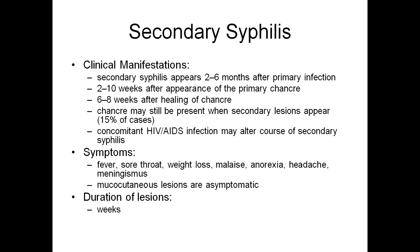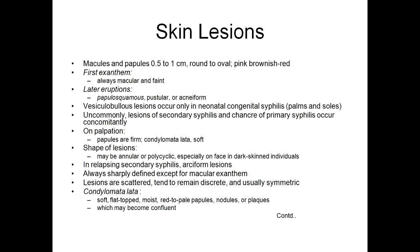Symptoms the patient can present with include fever, sore throat, weight loss, malaise, anorexia, headache, and meningismus — that is neck rigidity. Mucocutaneous lesions are asymptomatic and duration of lesions may range in weeks. Skin lesions in secondary syphilis can be either macules or papules, and can present as exanthem — often macular and faint in appearance.